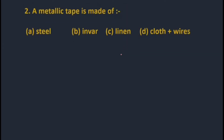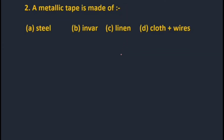Question two: Metallic tape is always made of cloth and wires — the cloth may be linen. Question three: Number of links in a 30-metre chain. For a 20 m chain there are 100 links, and for a 30 m chain there are 150 links, so option B is correct.